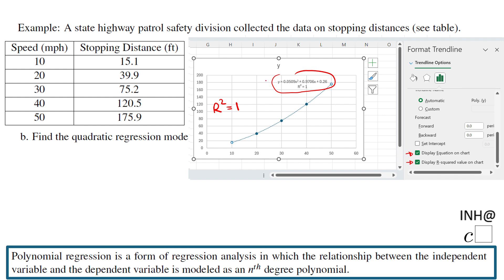And this is the equation. That's the equation we're going to need for the next part of our problem. y equals - copy this, it's going to be handy - 0.0509 x square plus 0.9706 x plus 0.26. I would suggest you to copy that equation. This is the quadratic that fits this data.